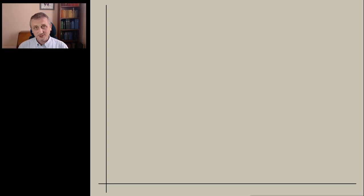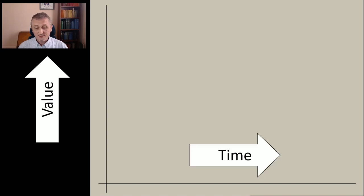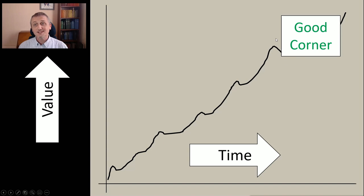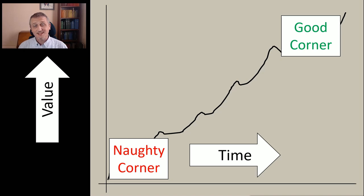Just a quick explanation of how we're used to seeing graphs. We often see values on the Y axis and time on the X axis, so this might be for example your savings account or the value of something. Generally speaking, we're very used to seeing charts like this, which means the top right is the good corner and the lower left is the naughty corner, because we're starting off there and over time we generally want things to get better.